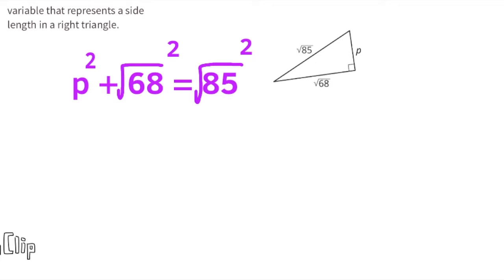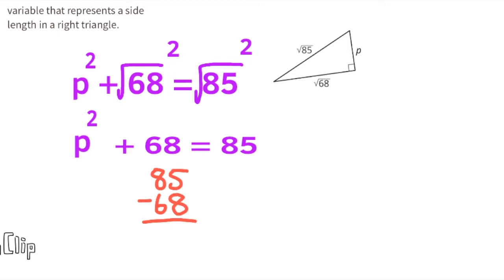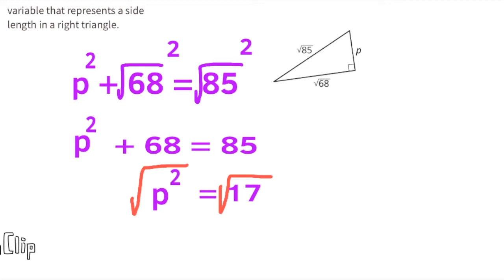Let's find the last missing side length. We use p² + (√68)² = (√85)². Since (√68)² = 68 and (√85)² = 85, the equation reads p² + 68 = 85. Subtracting 68 from 85 gives 17, so p² = 17. The square root of 17 is approximately 4.1, so side length p is approximately 4.1 units.